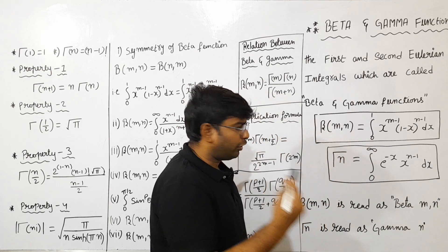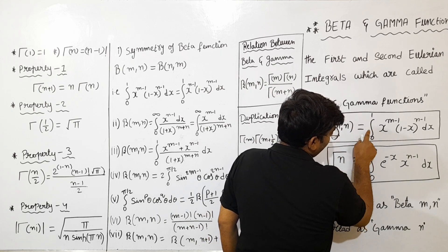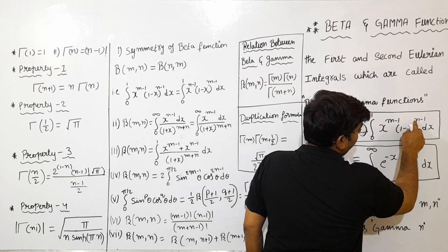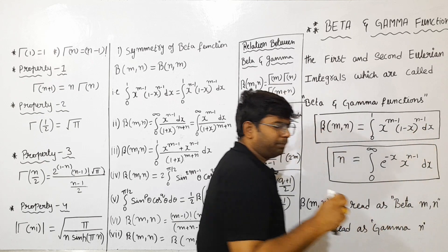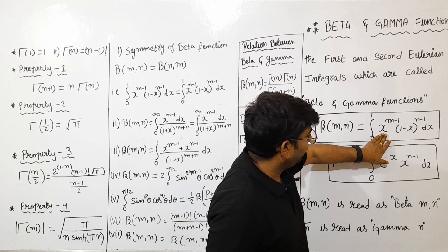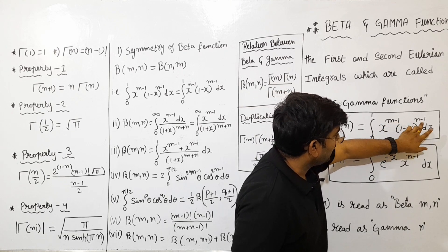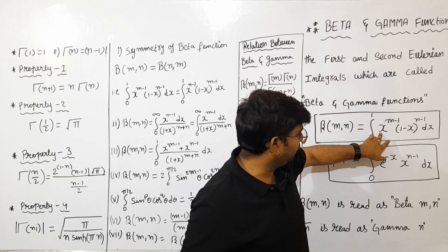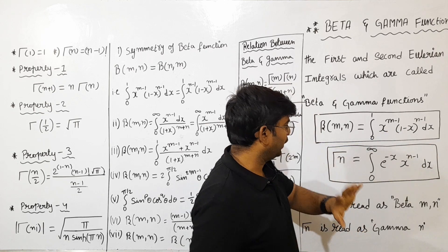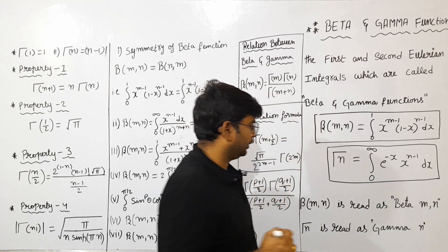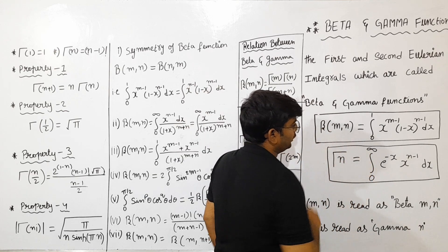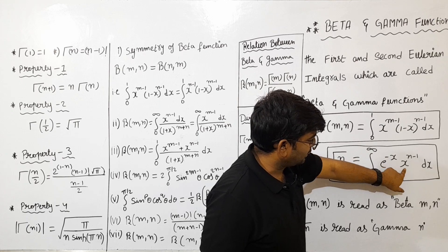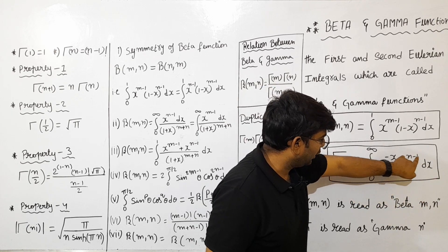The Beta(m,n) formula is the integration from 0 to 1 of x to the power of m minus 1 into (1 minus x) to the power of n minus 1 dx. The first part has x to the power of m minus 1, and the second part has (1 minus x) to the power of n minus 1.